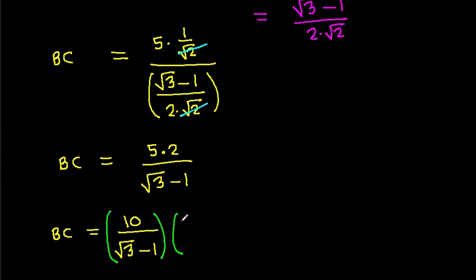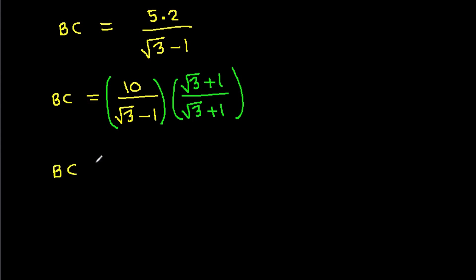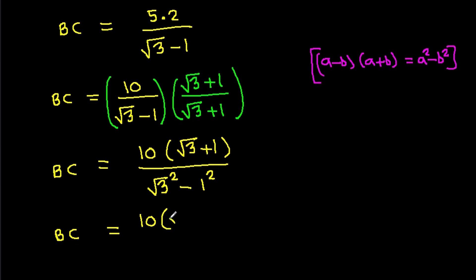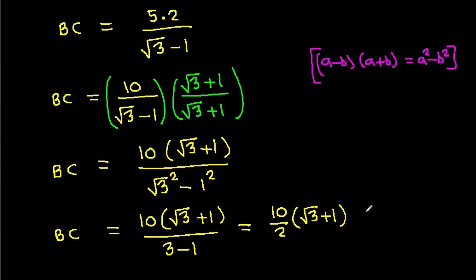Multiplying numerator and denominator by square root of 3 plus 1, using the identity (a minus b)(a plus b) equals a squared minus b squared, we get BC equals 10 times square root of 3 plus 1 divided by 3 minus 1, which is 10 divided by 2 times square root of 3 plus 1, that is 5 times square root of 3 plus 1.